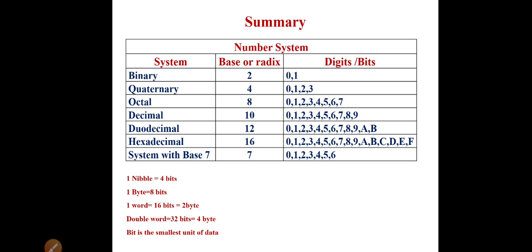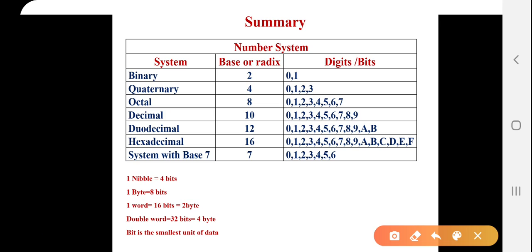Now, here is the summary for number system. As you can see, that for binary number system, the base is 2 and digits are 0, 1. For quaternary number system, the base is 4, numbers are 0, 1, 2, 3.